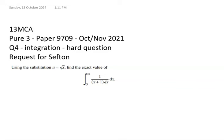Kia ora koutou. This video is a hard one from the November 2021 Pure 3 paper and it's a request for Sefton. The examiner's report noted that it was very badly done and it looks like most people didn't even get four marks out of six on this problem.